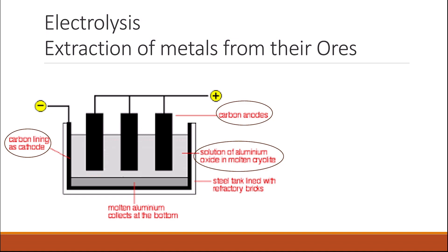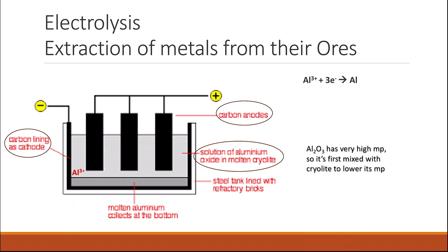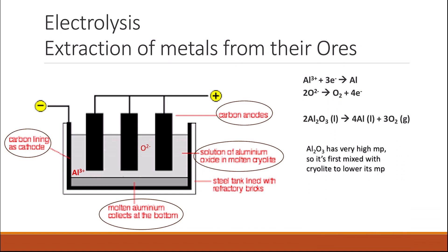Aluminium oxide itself has a very high melting point and is difficult to melt, so it is first mixed with cryolite to lower its melting point. When electric current is applied, the aluminium ions (positive) travel toward the cathode and are reduced to give elemental aluminium, which collects at the bottom. The oxygen ions travel toward the anode and are oxidized by losing electrons to give oxygen. The state symbols: aluminium oxide is liquid (molten), aluminium is liquid, and oxygen is a gas.